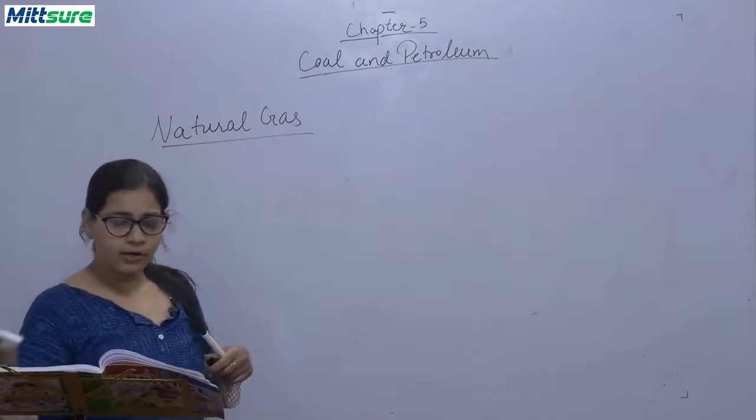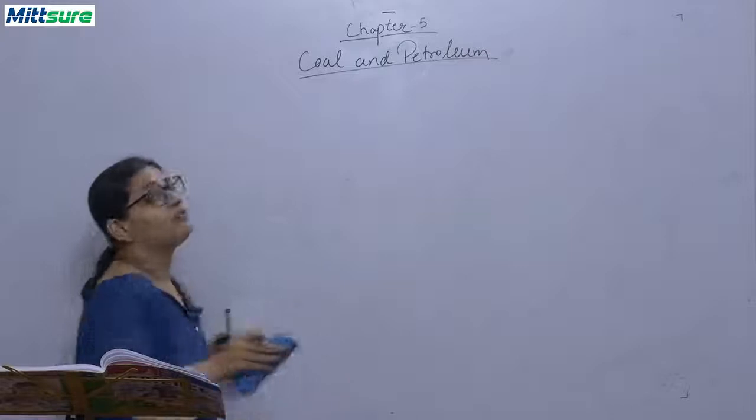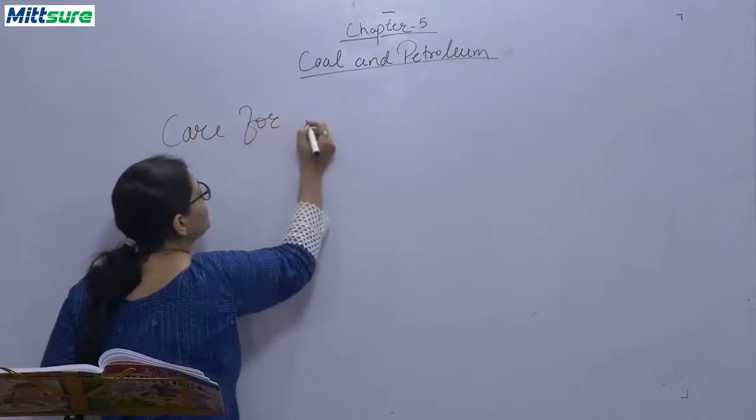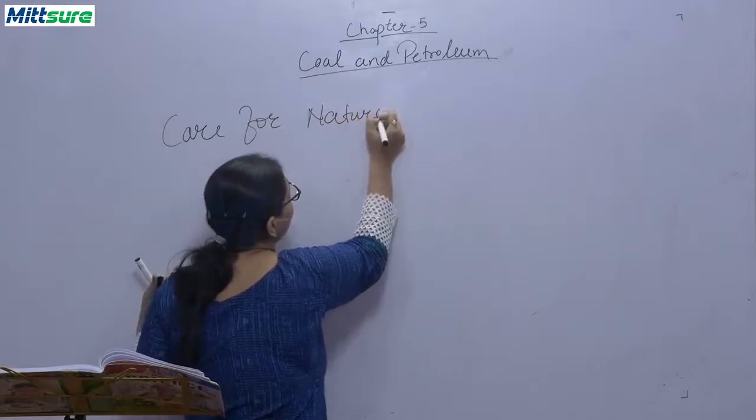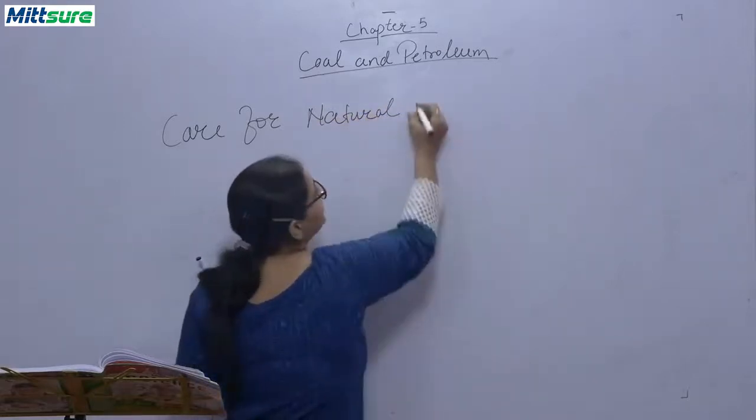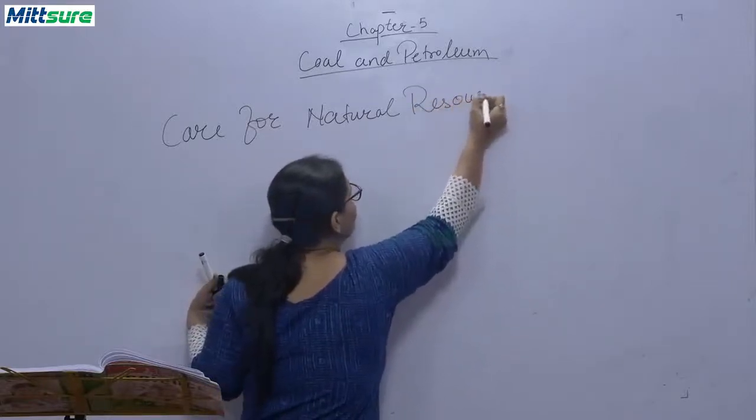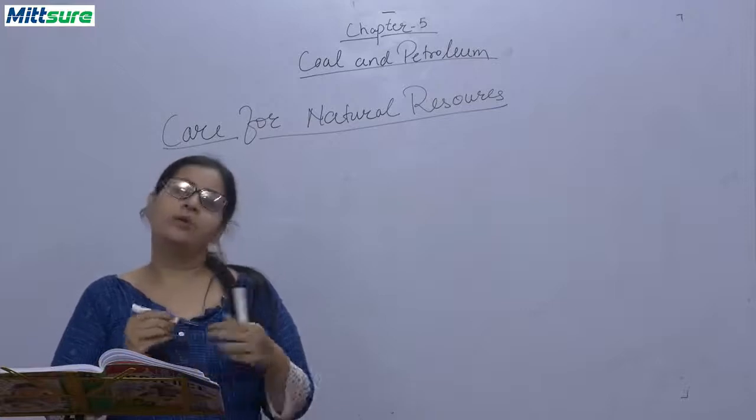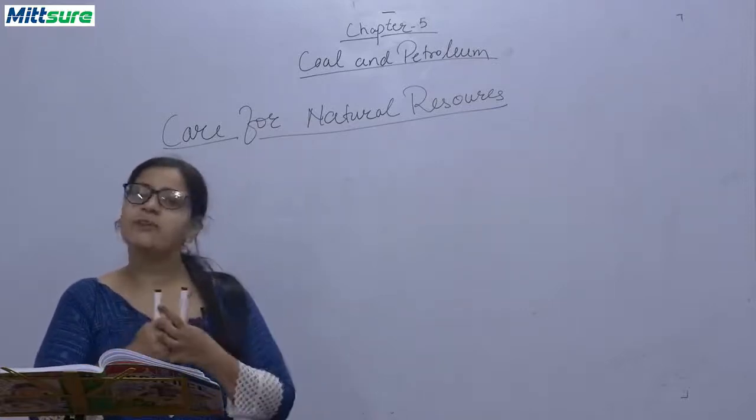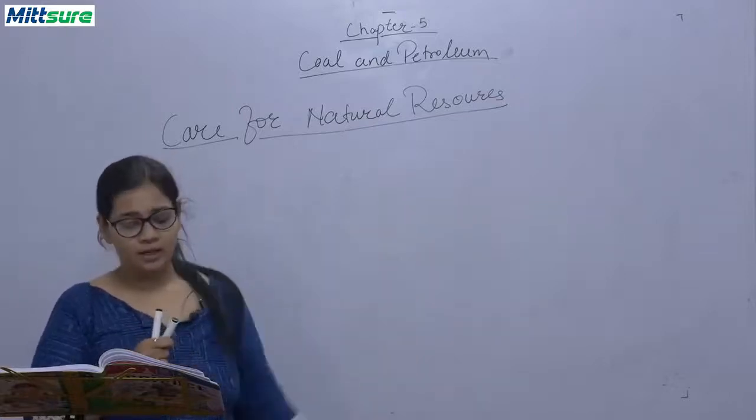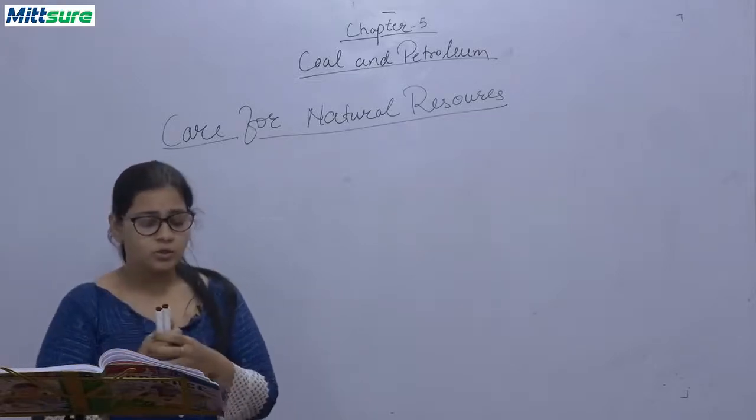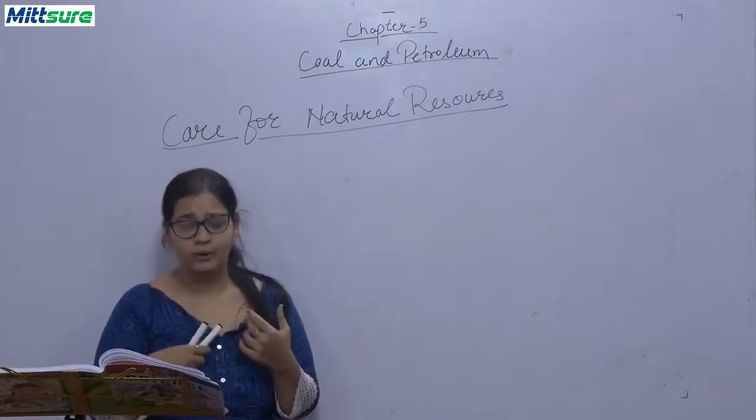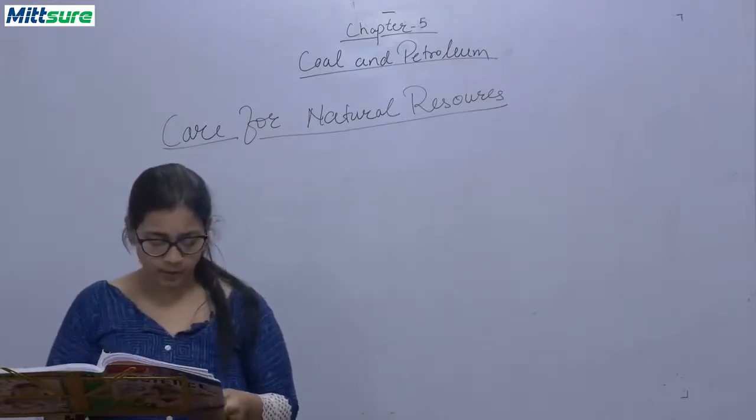Now, care for natural resources. Next heading is, care for natural resources. As this natural resources are very much non-renewable, we should take proper care for them so that they do not get exhaust very soon. So we should take proper care of this. How we can take care of this natural resources, we will be studying. Coal and petroleum meet 75% of our energy needs. And they are exhaustible and are getting depleted very, very fast.